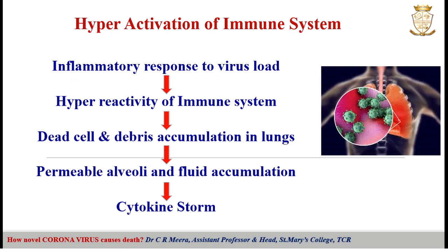Cytokines are immune cells recruited to the site of infection to neutralize pathogens. But in this case, the cytokine storm promotes large-scale inflammation in the body, adversely affecting the host cells. The blood vessels become more permeable, leading to more fluid leakage in the body. As a result, blood and oxygen do not reach different parts of the body, which can lead to multi-organ failure.